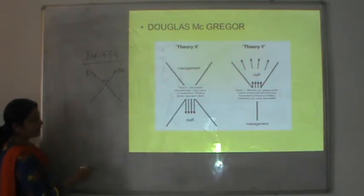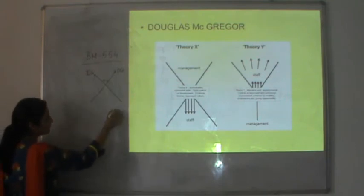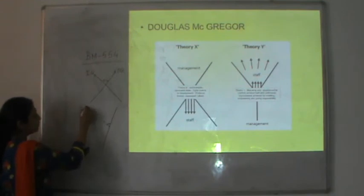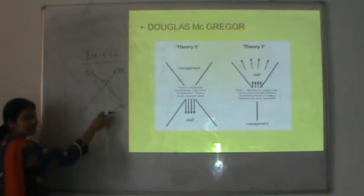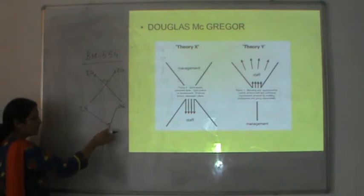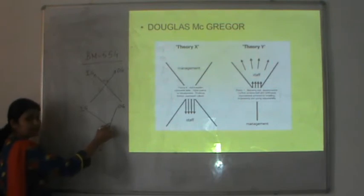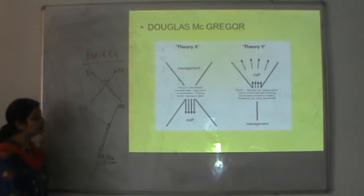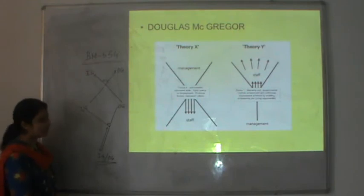In Theory Y, if you see the diagram, there is an alignment where individual goals and organizational goals meet — that is the Y shape. This means individual goals get aligned with organizational goals, and that is why there is a difference in the characteristics of people under Theory X and Theory Y.